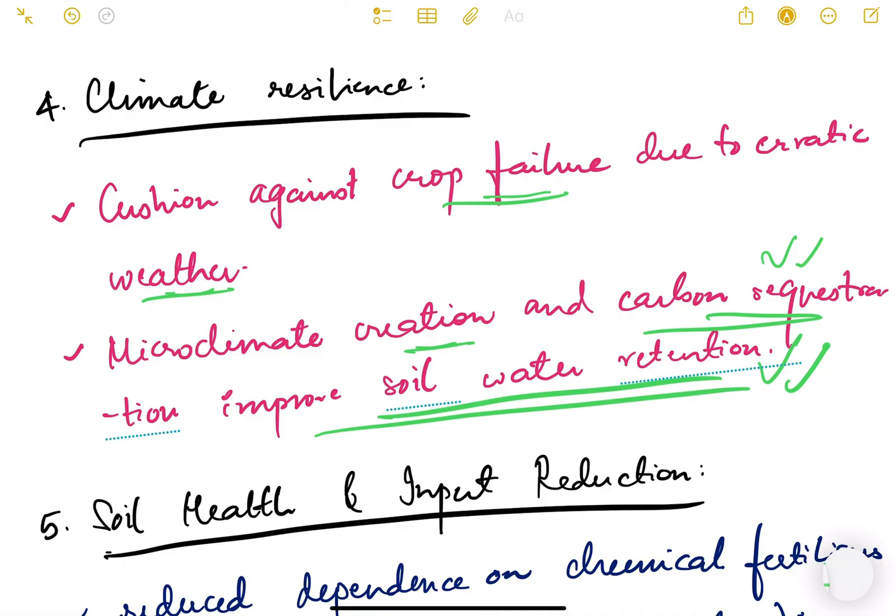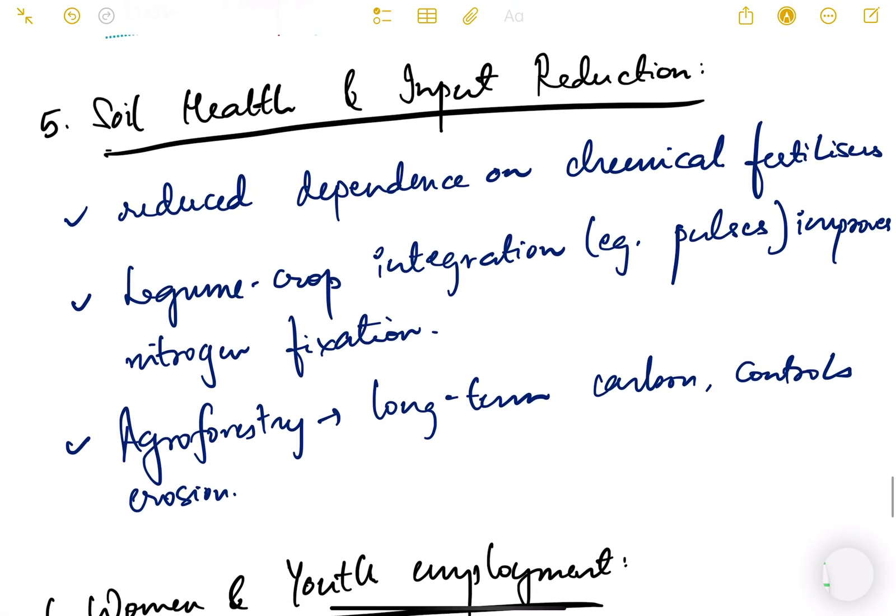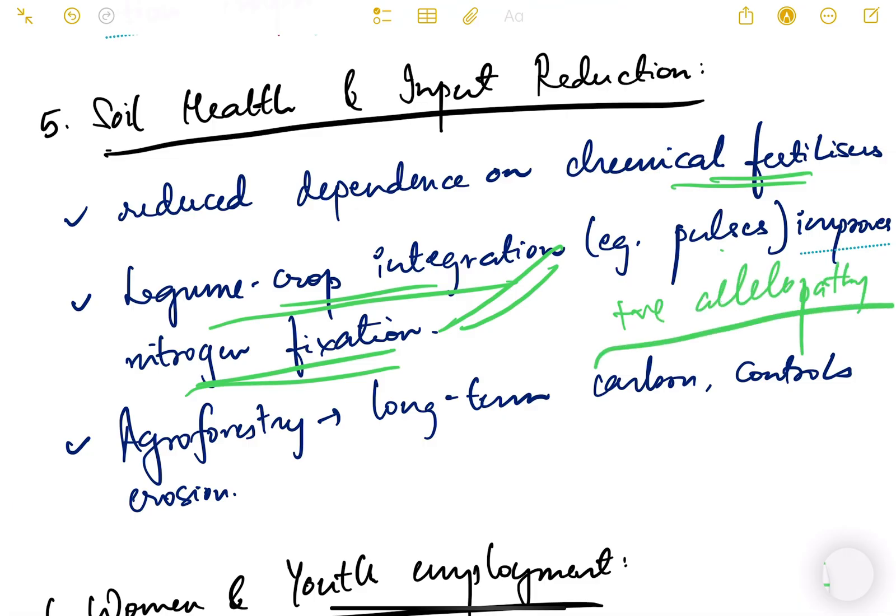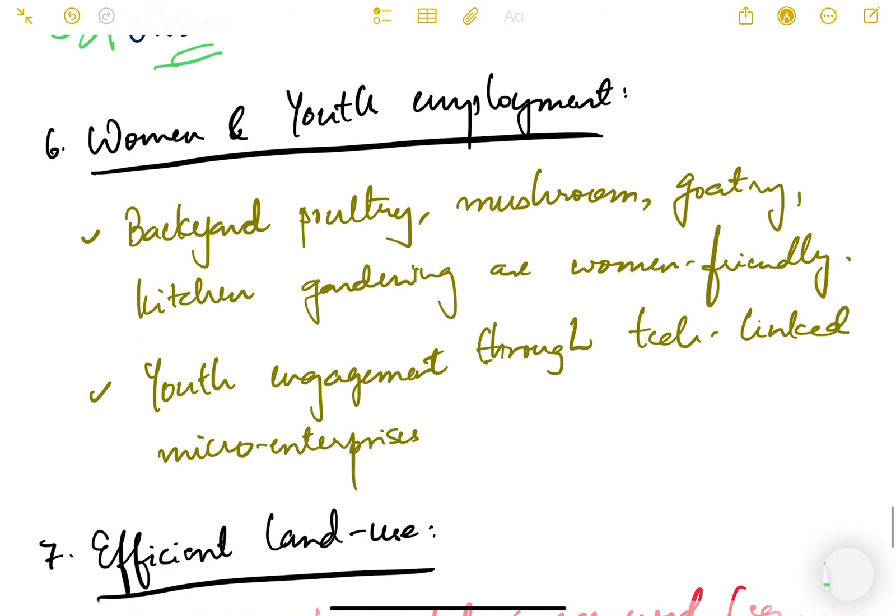Soil health and input reduction - reduces dependence on chemical fertilizers. Legume crop integration, for example pulses, improves nitrogen fixation. This is a kind of positive allelopathy for farming. Agroforestry can be beneficial for long-term carbon and controls erosion also.